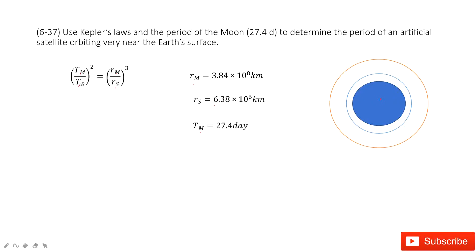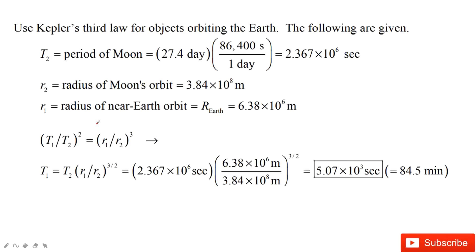Now, the only thing unknown is the period of the satellite. And then we insert all these known quantities. We can get the final answer, T, which is around 84.5 minutes.